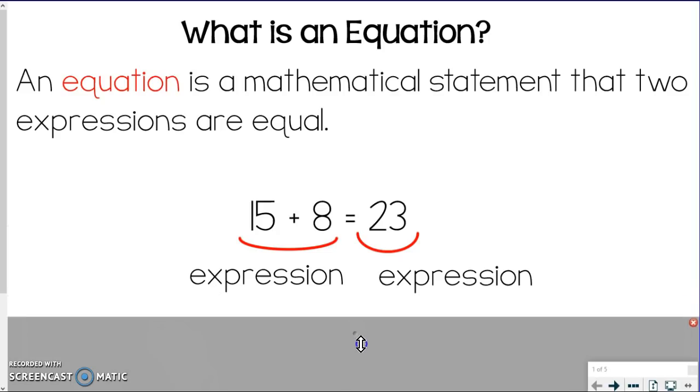So just to show you, we've got 15 plus 8. That would be one expression, and then on the other side, 23 would be the other expression, and we're saying those are equal to each other using the equal sign. So two expressions using an equal sign or some kind of sign, that's an equation.